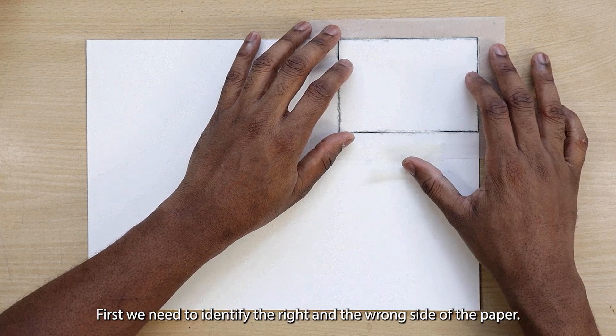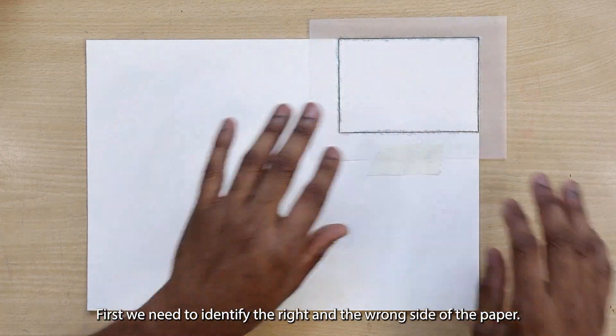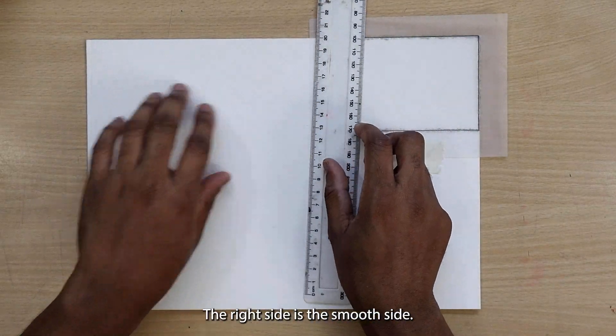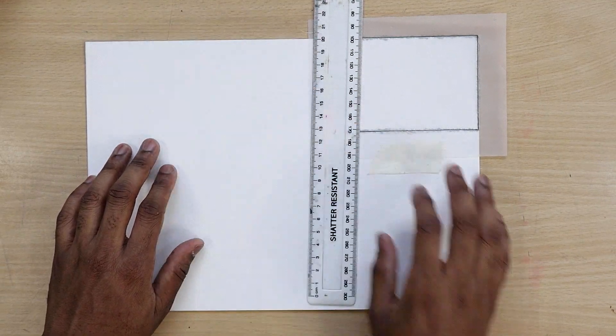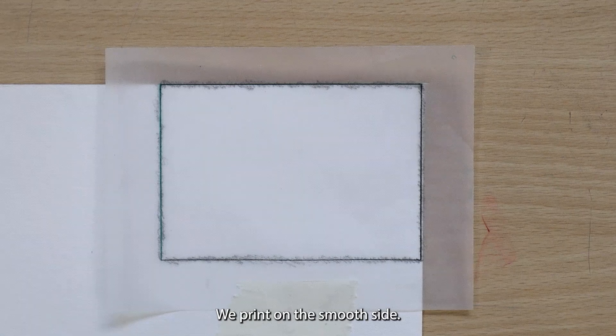First, we need to identify the right and wrong side of the paper. The right side is the smooth side. We print on the smooth side.